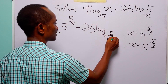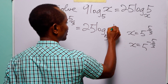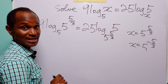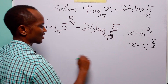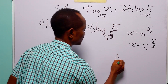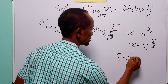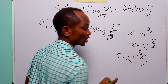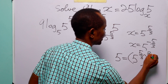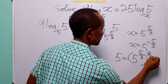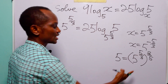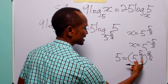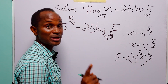Now let us look at the right-hand side. You know that 5 = (5^(5/3))^(3/5), because to verify this, all we have to do is multiply the two powers together, and when we do that...